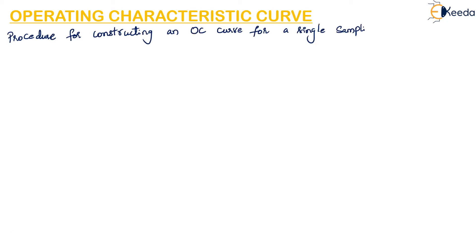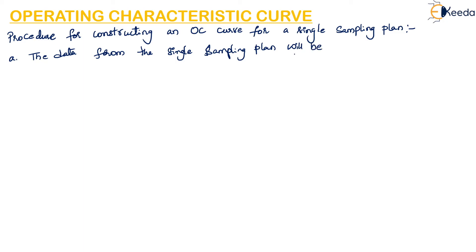Now we will see the procedure for constructing an OC curve for a single sampling plan. The data from the single sampling plan will be: capital N is the lot size, small n is the sample size, and C is the acceptance number.